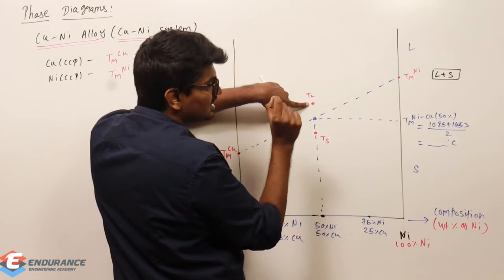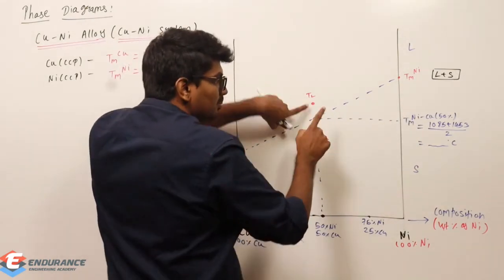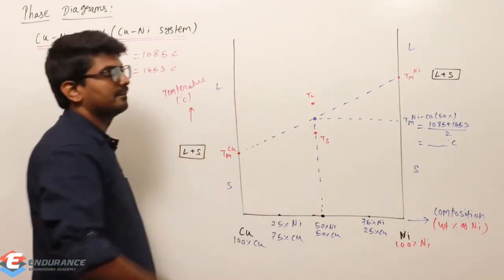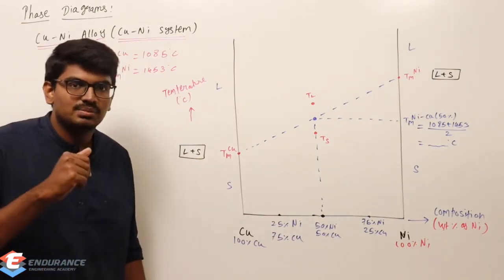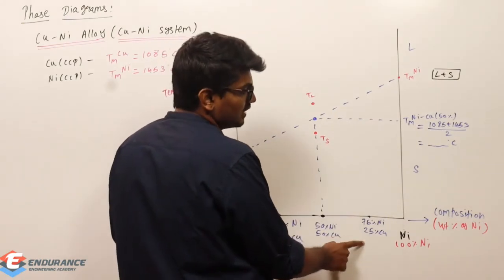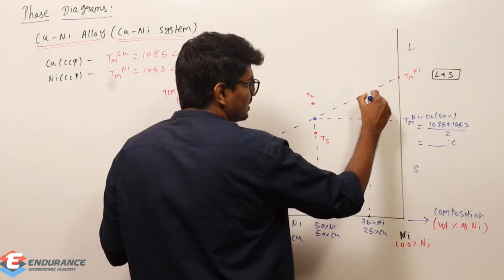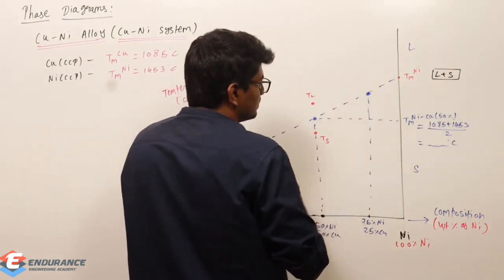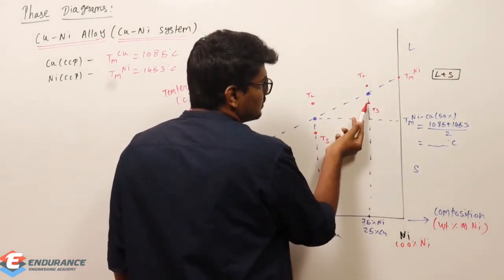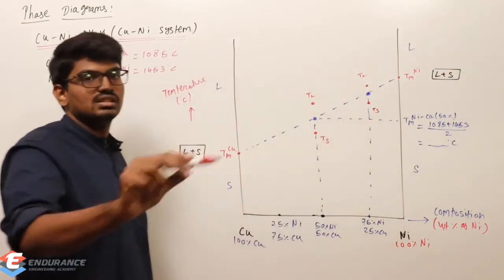In the region between TL and TS, both solid and liquid exist in equilibrium. For a pure metal, this is just a point because there is no change in temperature. But for an alloy we get a line. Repeating the experiment with different compositions — 25-75, 75-25 — again we get TS below and TL above: TS is the starting of liquid generation, TL is when all solid has been converted to liquid. So in the region between TL and TS, liquid plus solid exist in equilibrium.